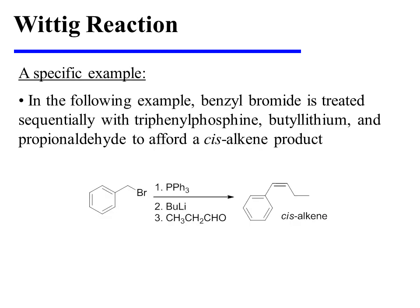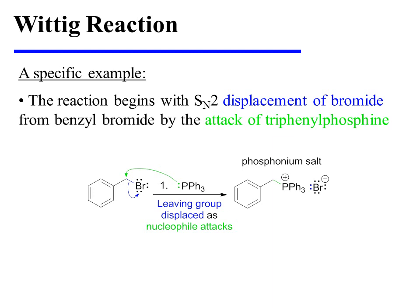In the following specific example, benzyl bromide is treated sequentially with triphenylphosphine, butyllithium, and propionaldehyde to ultimately afford a cis-alkene product. The reaction begins with SN2 displacement of bromide from benzyl bromide by the attack of triphenylphosphine. The phosphonium salt is the product of this step.